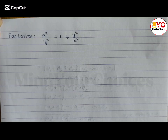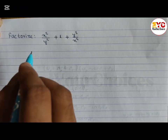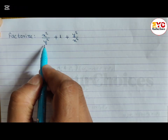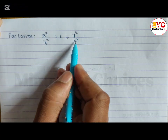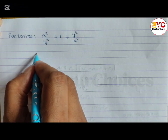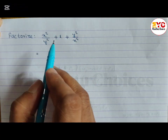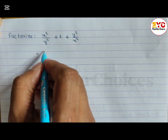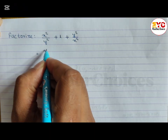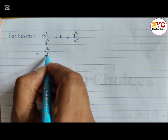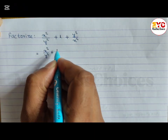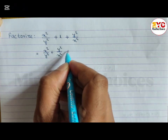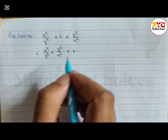In this video I will teach you how to factorize easily. We have a question: x squared divided by y squared plus 1 plus y squared divided by x squared. First of all we take the first and last terms, so we can write x squared divided by y squared plus y squared divided by x squared plus 1.